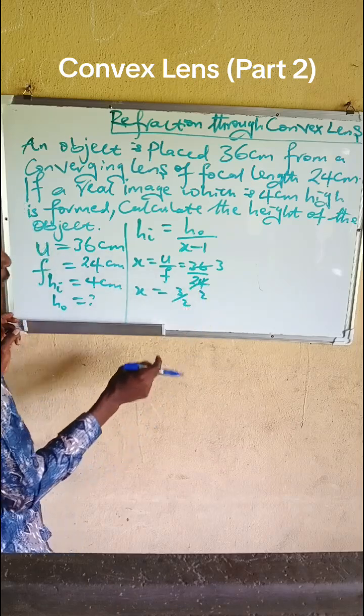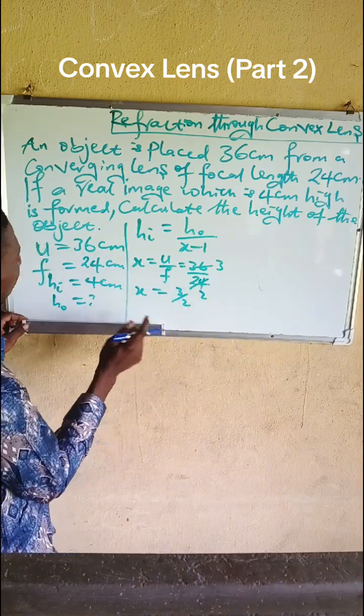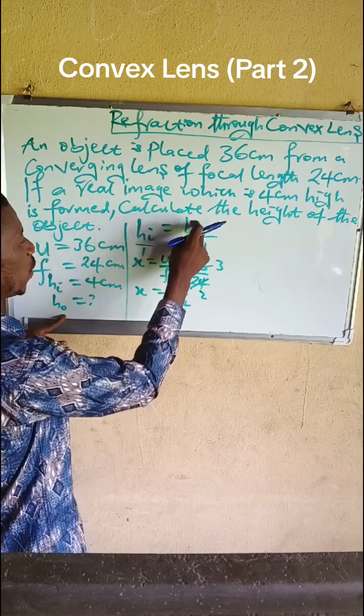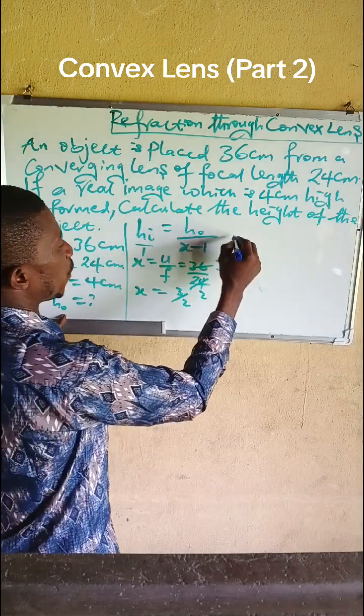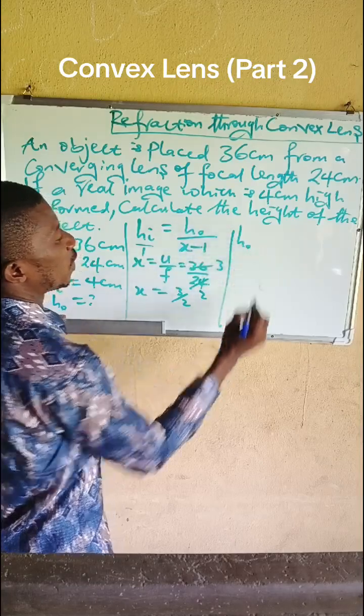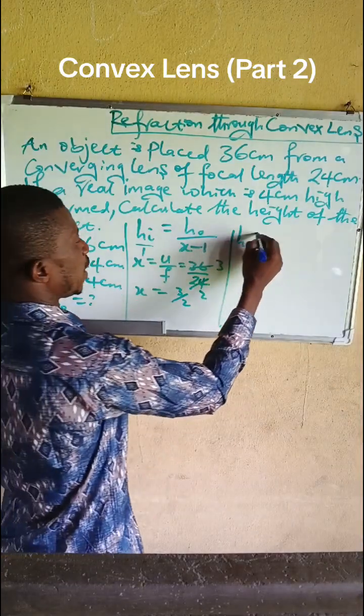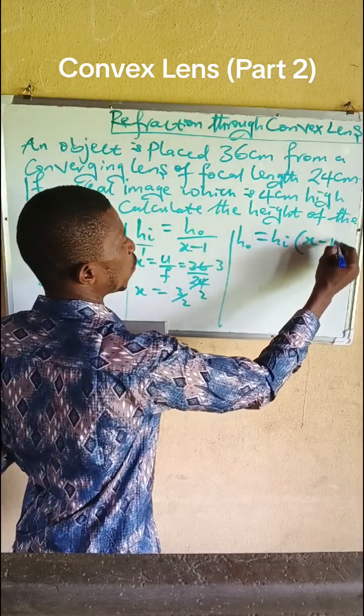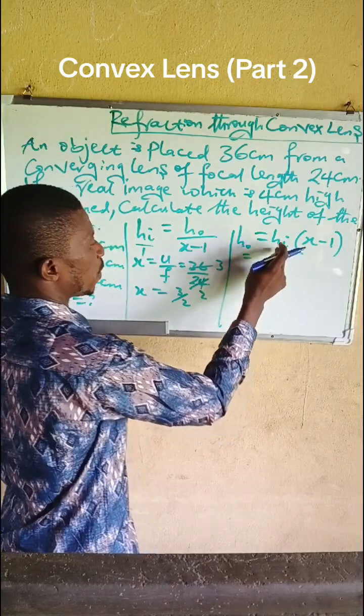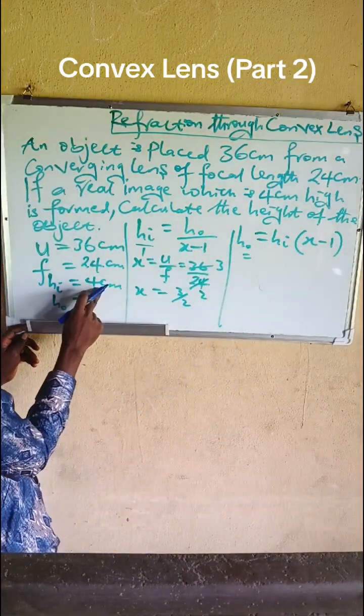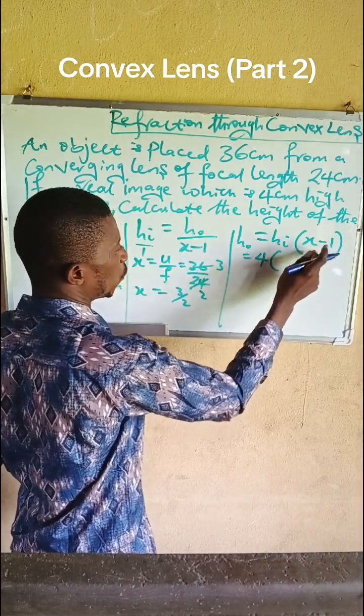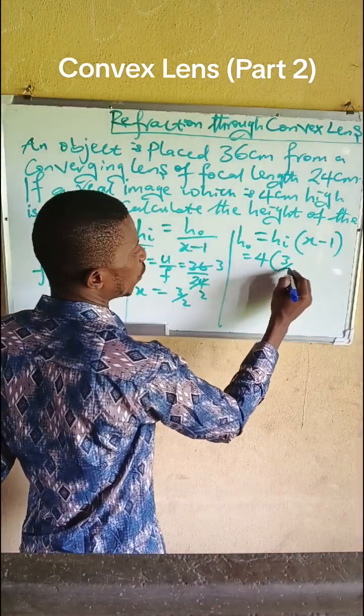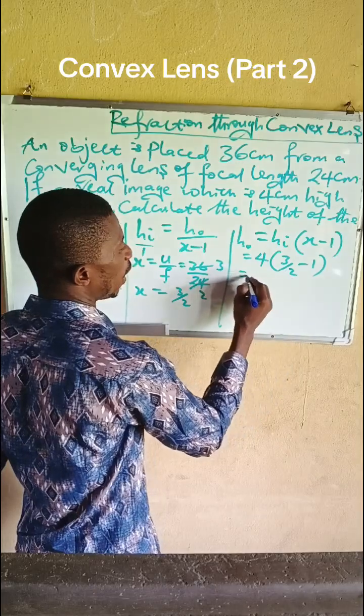Now we are looking for object height, so we cross-multiply. H₀, that is object height, equals image height times (x - 1). That gives us: image height is 4cm, so 4cm times x, where x is 3/2, so 4 times (3/2 - 1).